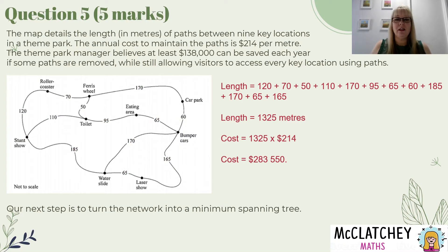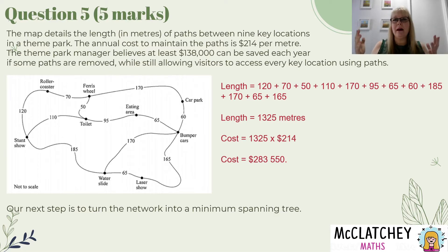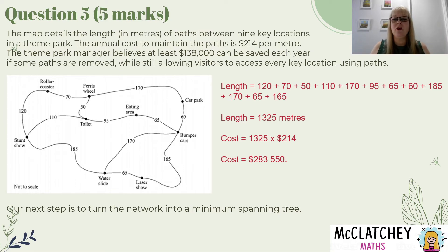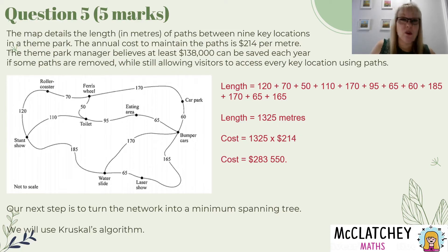What I need to do is work out what happens if I change the paths around by cutting some out. The way to do that is a minimum spanning tree. A minimum spanning tree makes sure every location can be reached by reducing the number of paths and not creating any loops. We're going to use Kruskal's algorithm today. There's also Prim's algorithm, but I prefer Kruskal's — it's a little bit neater. It doesn't matter which one you use as long as you do it correctly.